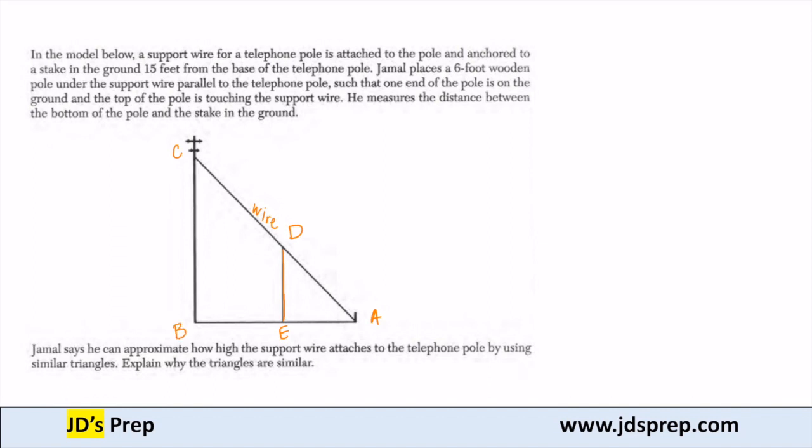And so what we need to prove for Jamal is that triangle ABC is similar to triangle AED. Let's prove that they're similar by angle, angle.